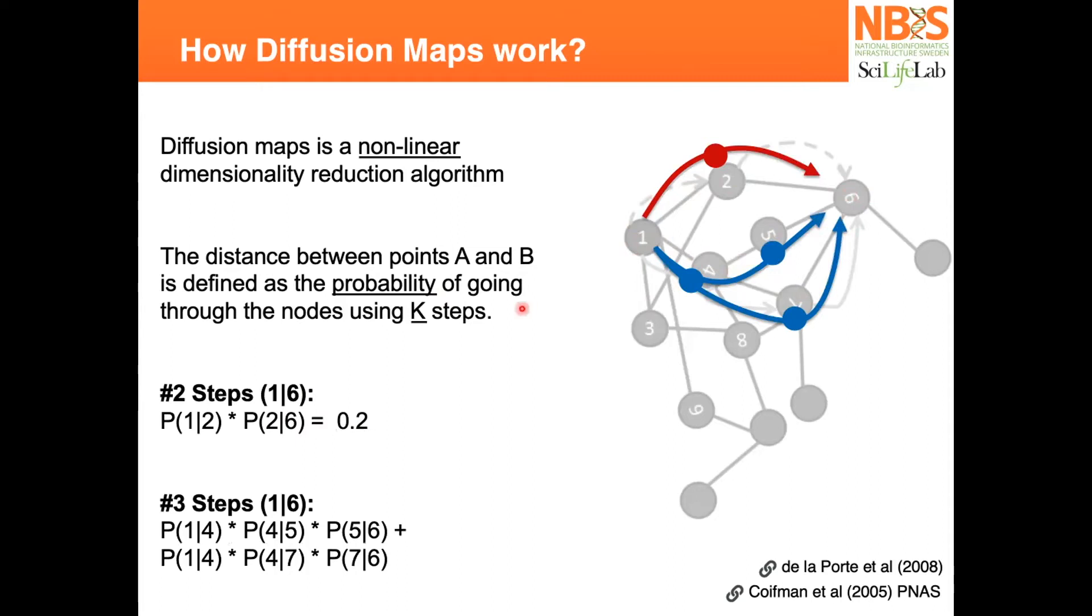So here there are these two probabilities of going from one point to another via these intermediate points. If I increase to four steps, then I can go one, two, three, four. That's the general idea.